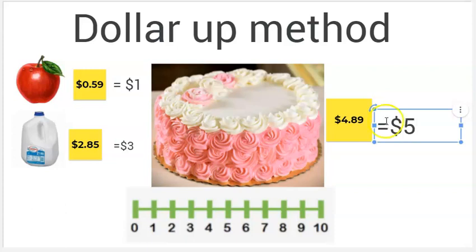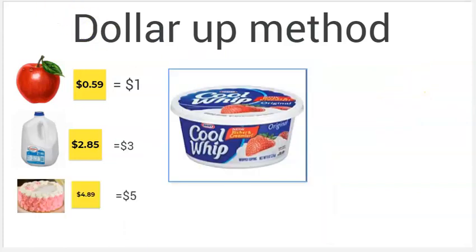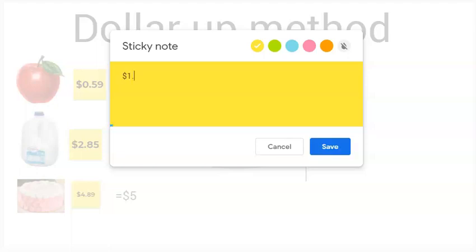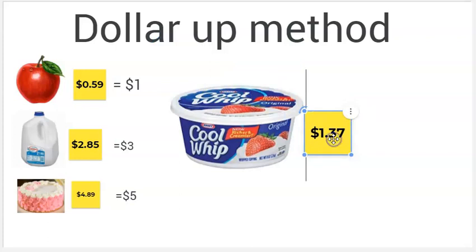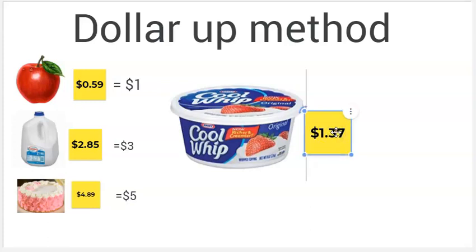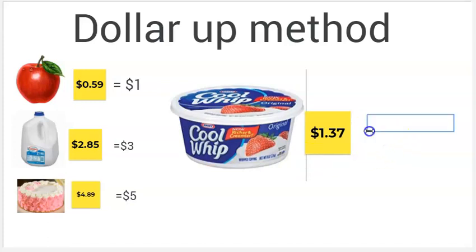Now let's practice a couple without the number line. Do you think you're ready? I decided I'm getting the cake for my sister's birthday, but we also have some pie at home and I really want some whipped cream — some Cool Whip. When I look at the label, I see the Cool Whip costs $1.37. How much money do I need to give to the cashier? I'm going to cover up everything after the decimal, and I need to decide: what is one more than one? One, two. I need to give the cashier $2 to cover the cost of the Cool Whip.